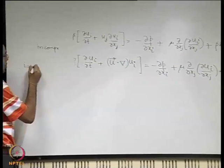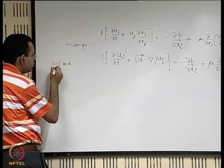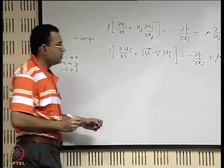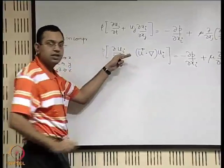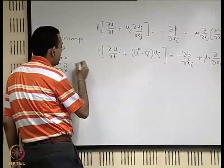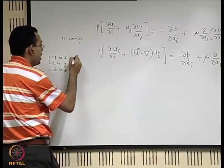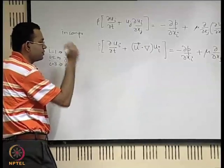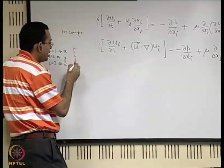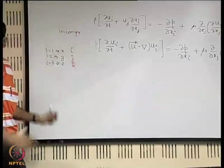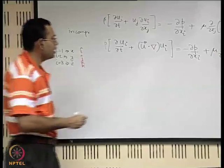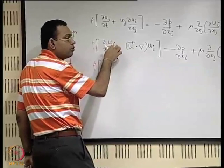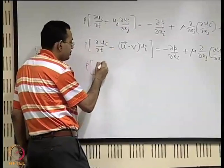We should remember that i equal to 1 implies the x component, i equal to 2 implies the y component, and i equal to 3 implies the z component. So for i equal to 1, take the x component and multiply with i-cap; i equal to 2 gives the y component multiplied with j-cap; i equal to 3 multiplied with k-cap, and add those together. So rho times partial derivative with respect to time of u1·i + u2·j + u3·k becomes the velocity vector u.